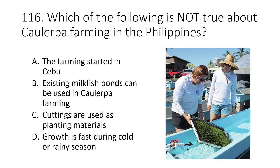Question 116. Which of the following is not true about Caulerpa farming in the Philippines? A. The farming started in Cebu B. Existing milkfish ponds can be used in Caulerpa farming C. Cuttings are used as planting materials D. Growth is fast during cold or rainy season. The answer is D. Growth is fast during cold or rainy season.